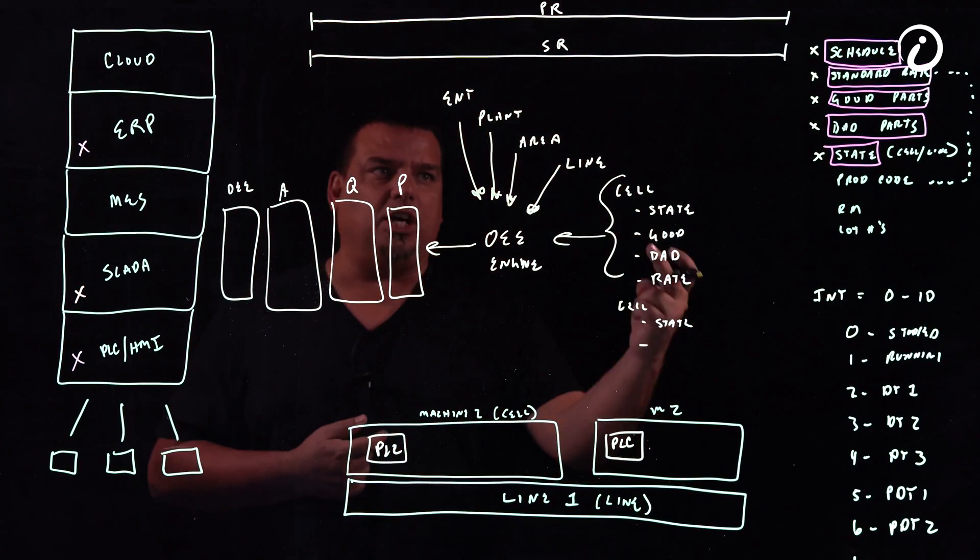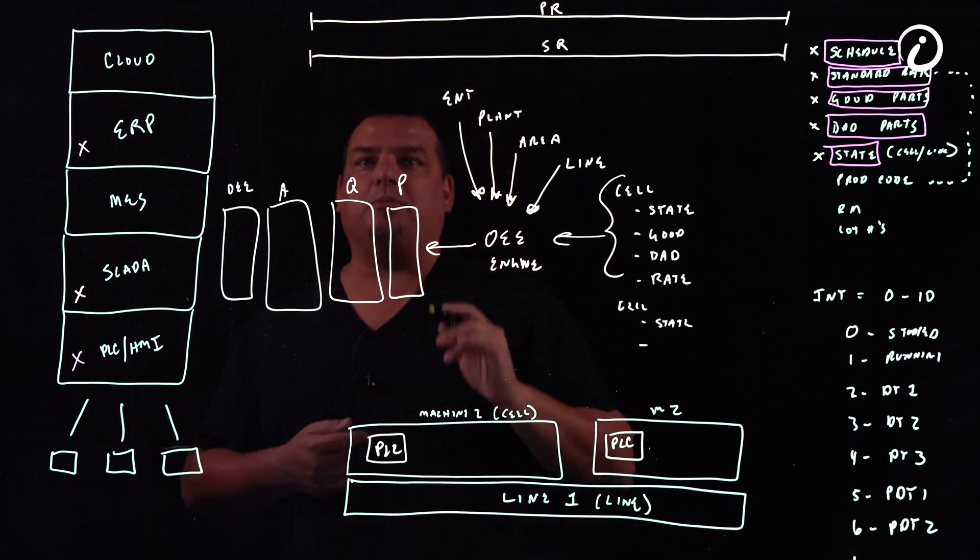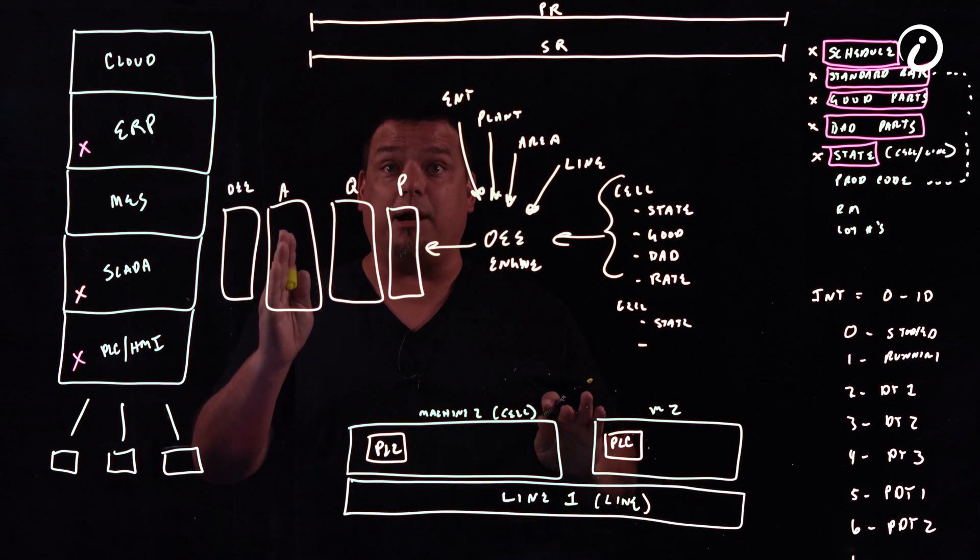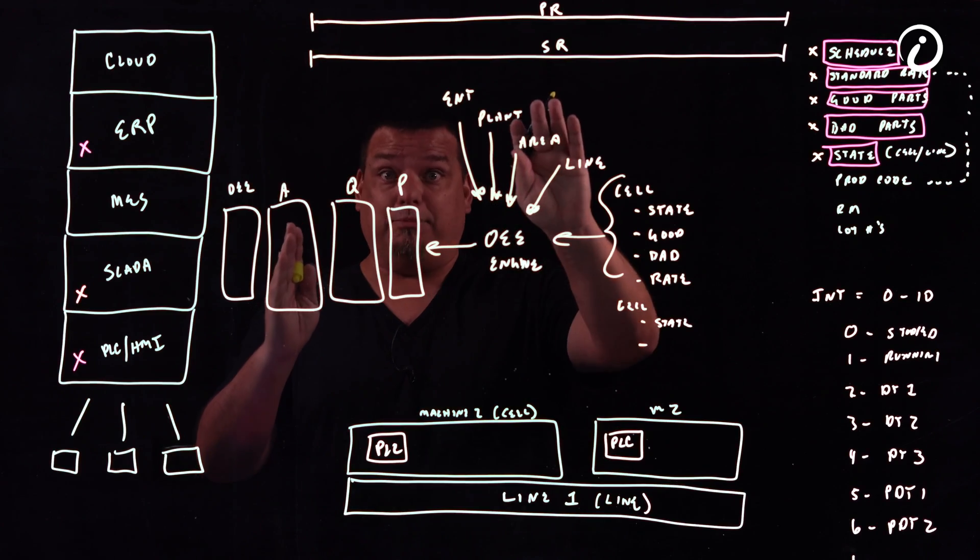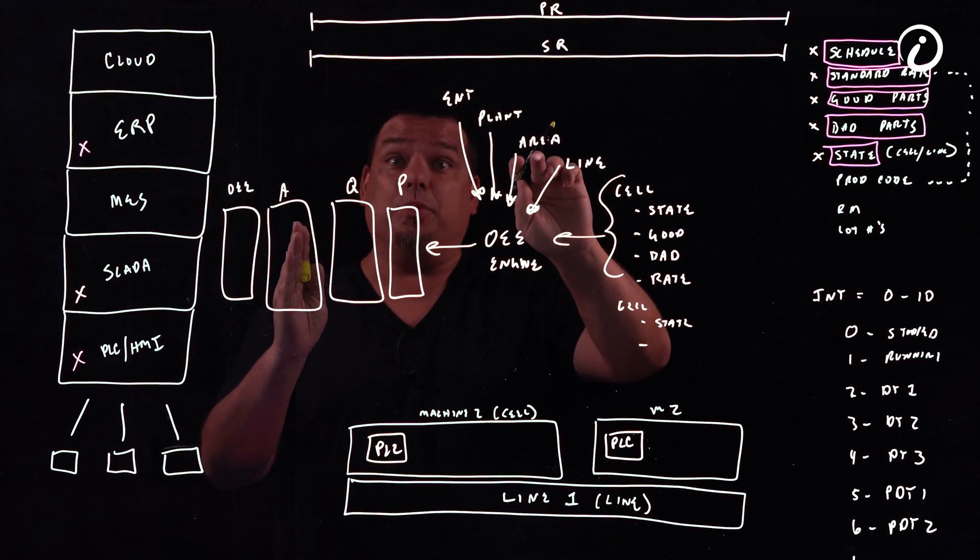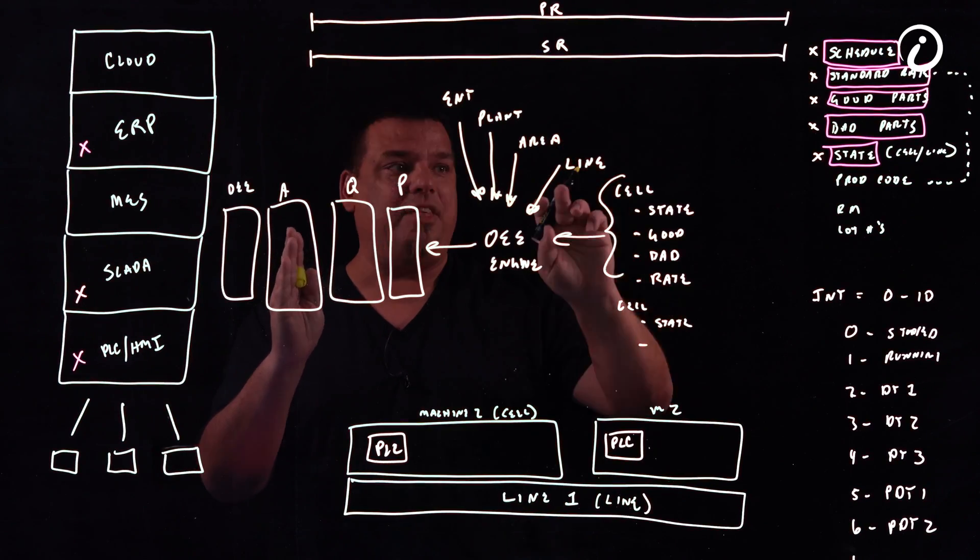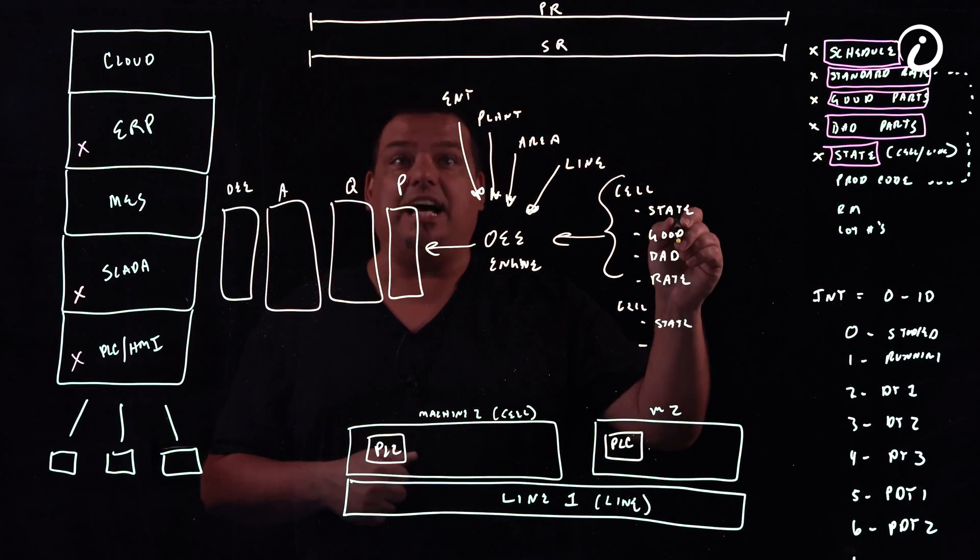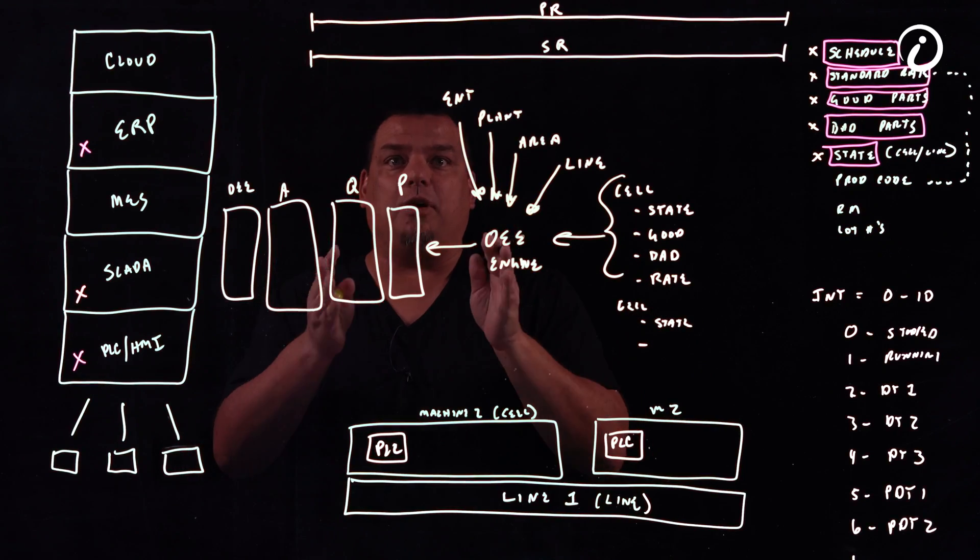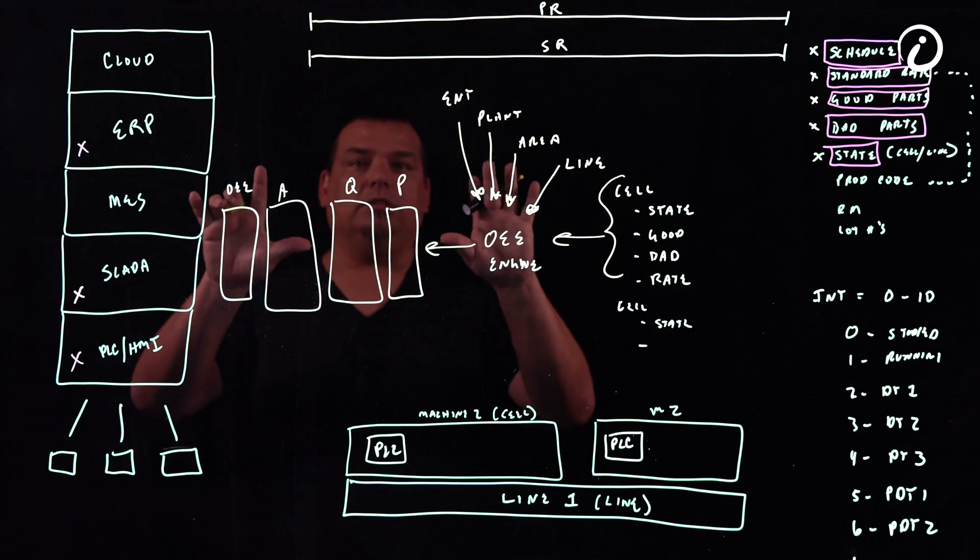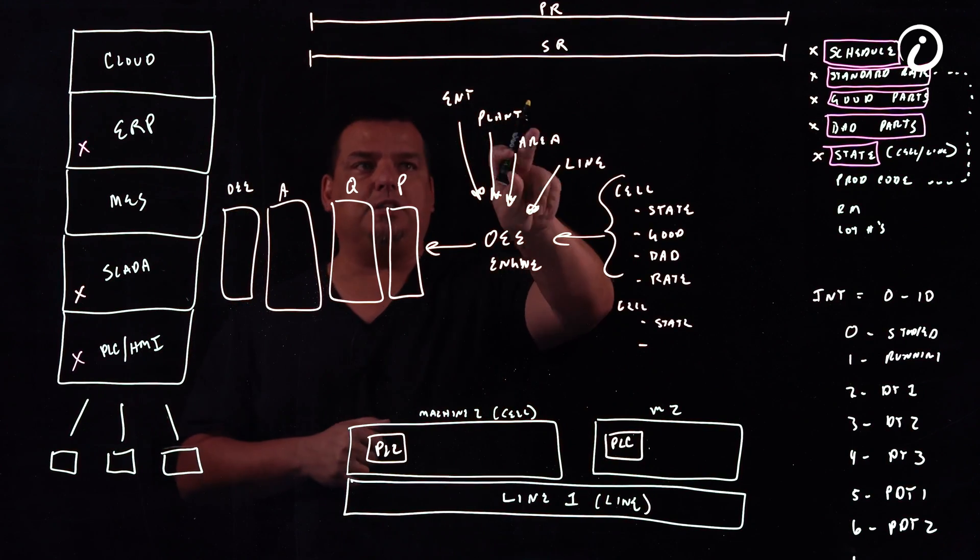We actually don't generally do it this way. We do it in the other direction. The OEE for the enterprise was really low. So let's go look at all the OEE for the plants and find out where our problem plant is. We figure out what the problem plant is. And then we look for the problem area within the problem plant. And then we drill down to the problem line within the problem area. And then we drill down to the problem cell within the problem line to get down to our root cause. And then we develop our continuous improvement plan based on what that root cause is. Right now, people, human beings, are doing this process.